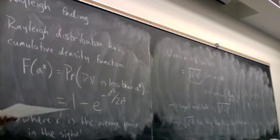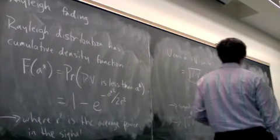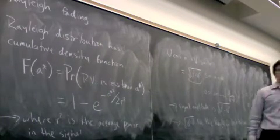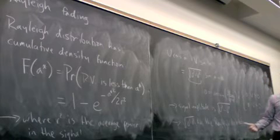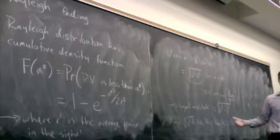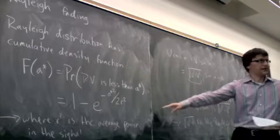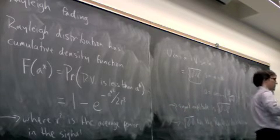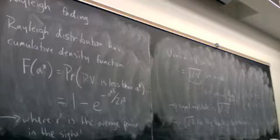So basically, if you have lots of paths and all of the paths are roughly the same strength, you will expect that the signal amplitude will be random. And this basically tells you the probability that the signal amplitude will fall below something critical.